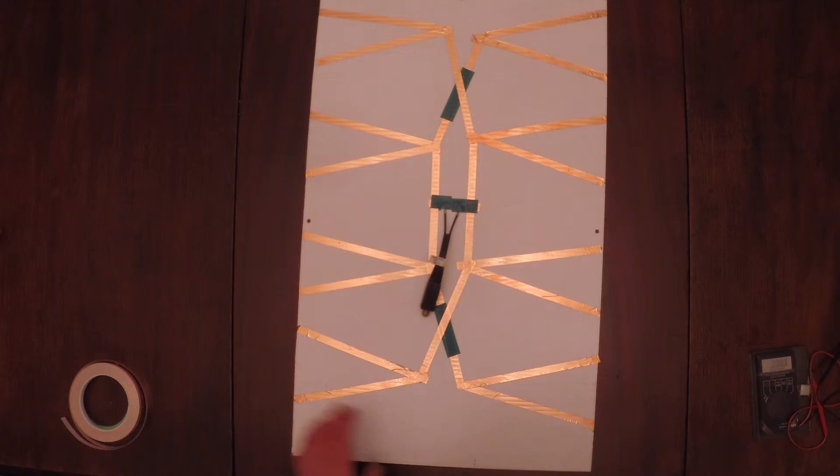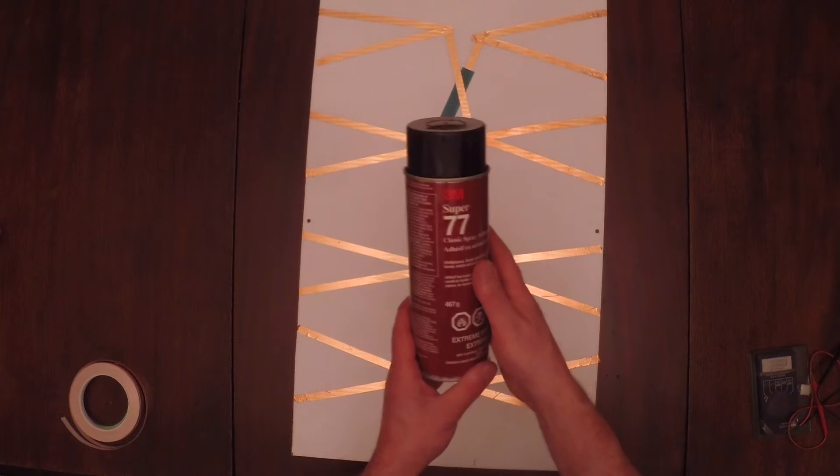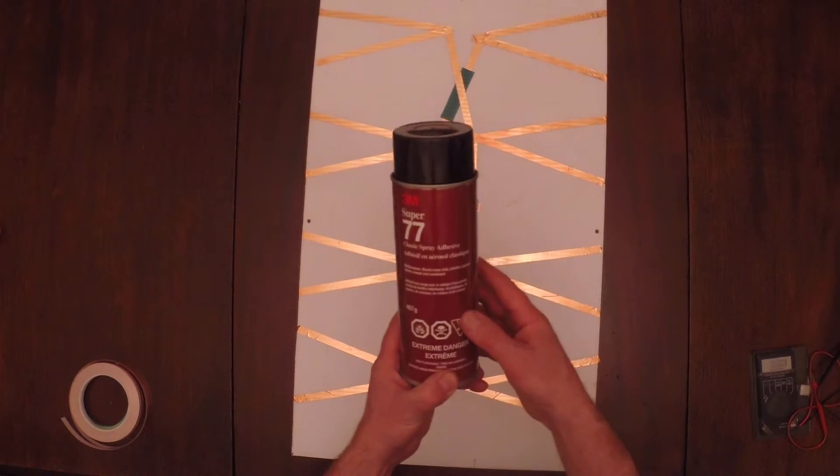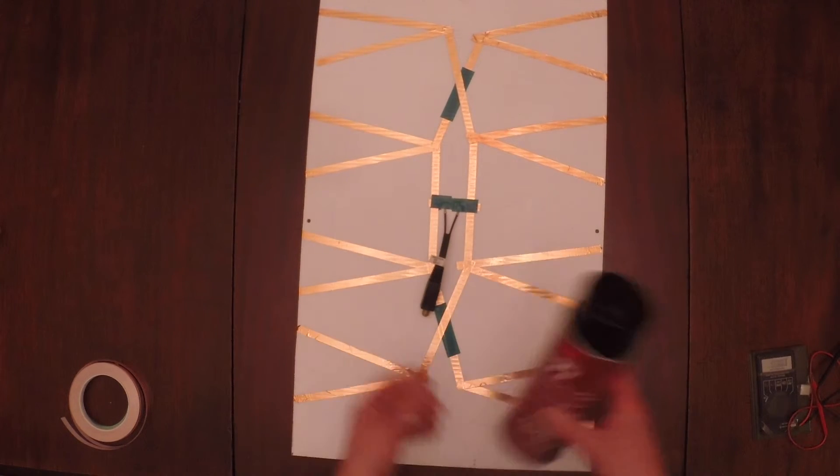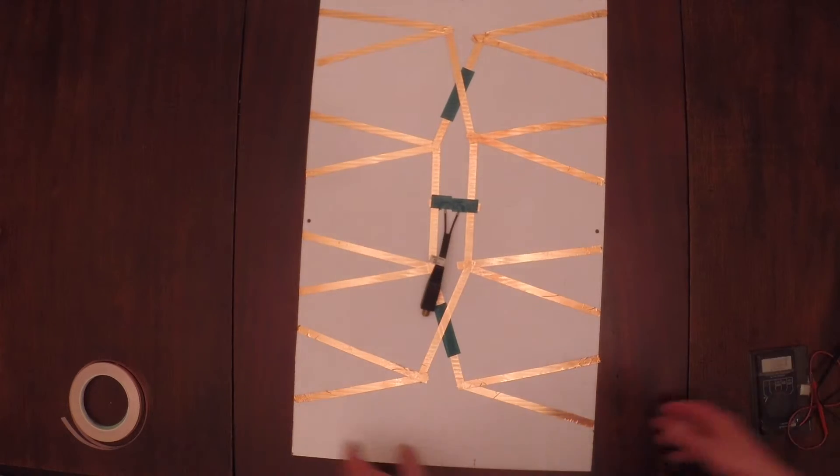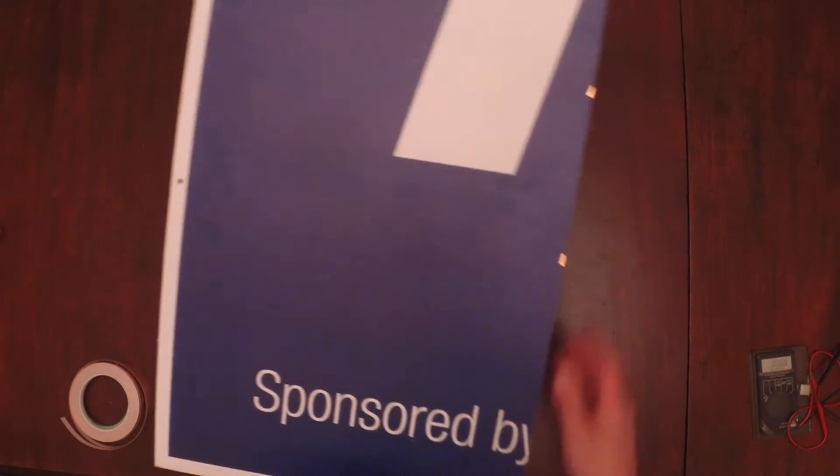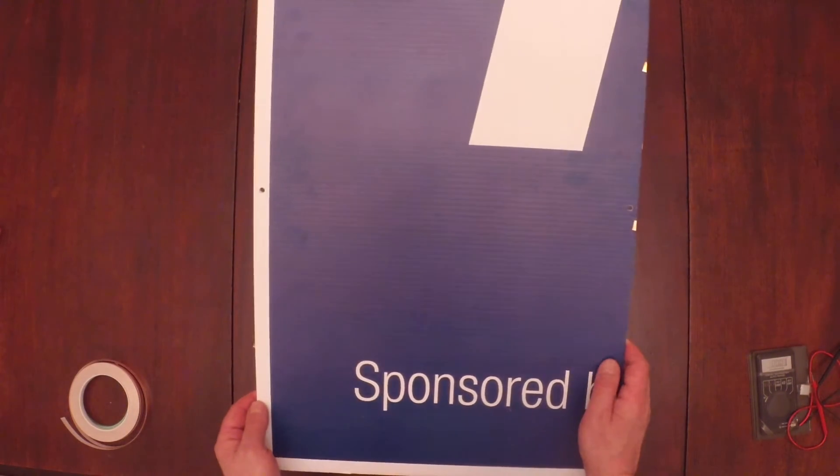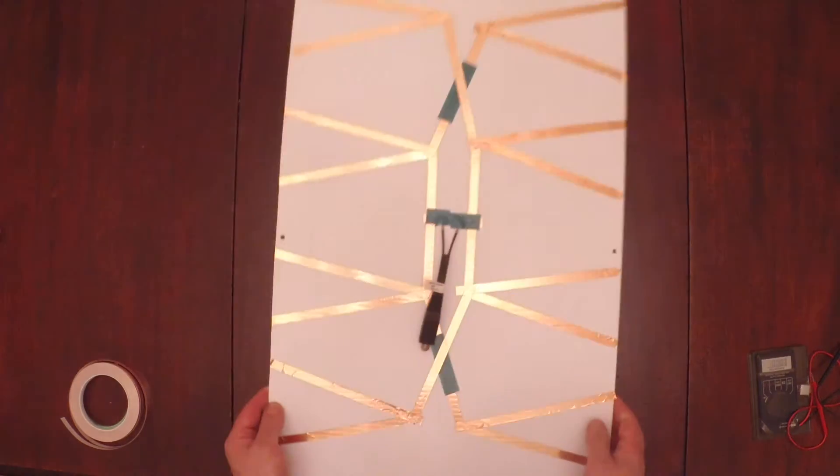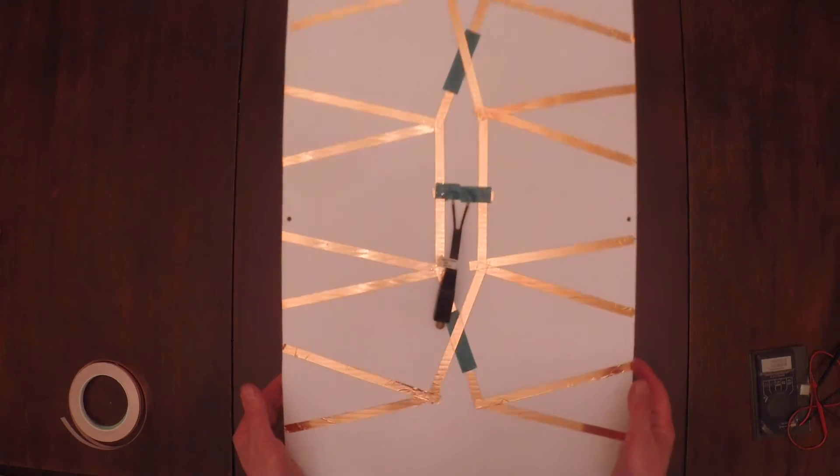So I use 3M super 77. So basically once I've made it, I can just glue a nice piece of drawing paper over it. And that just makes a nice flat, thin antenna. You can paint it any color you want. They just sit on the back of the TV and they're really good.